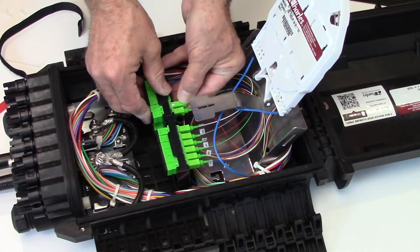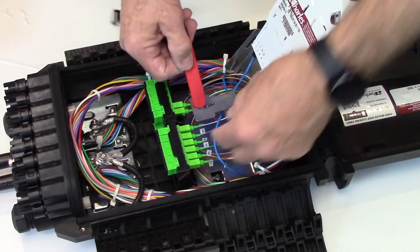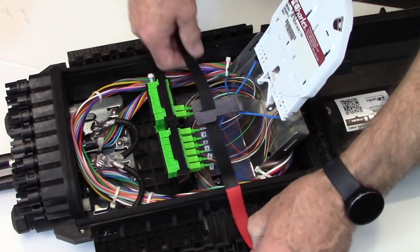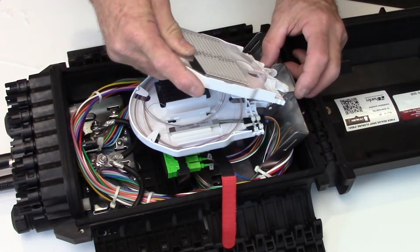Coil the splitter output tails inside the fiber storage basket and connect each fiber to the appropriate adapter. If required, install the second tray and secure with the provided strap.